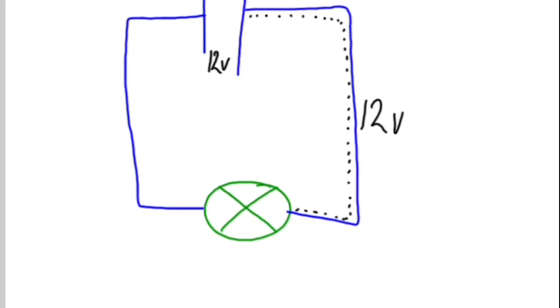So on this side of the circuit, there will be 12 volts of pressure, 12 volts worth of force, pushing the electrons up to the resistance. On the other side of the resistance, on the return side, there will be zero volts.